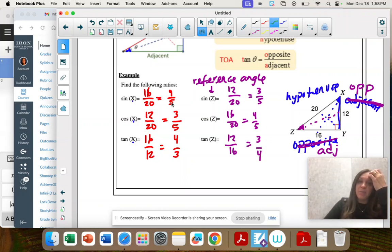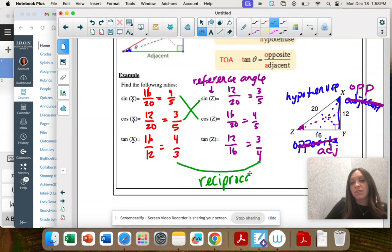So notice what happens. Sine and cosine switch when you switch the reference angle. And on tangent, you take the reciprocal when you switch the reference angle.